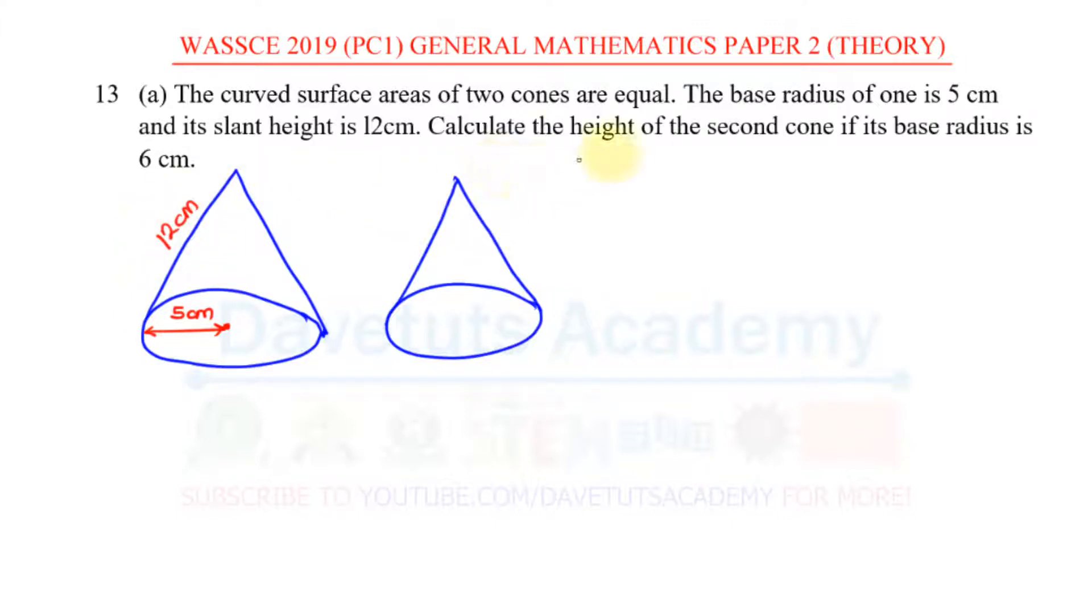Now we are to calculate the height of the second cone if its base radius is 6 cm. Look at what they are telling us, they are asking us for the height not the slant height. That means that what we are looking for is this height. If I am to call that height, let me call it h but we are given that its base radius is 6 cm so here this is 6 cm.